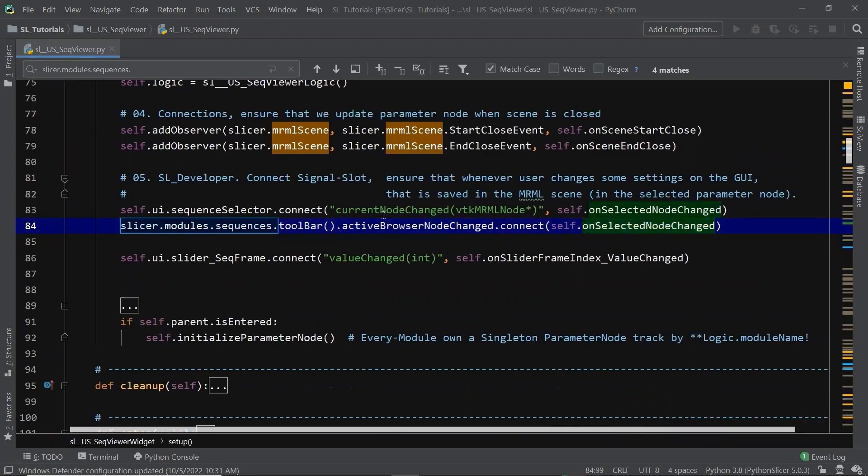We are not done yet. Let's navigate to the slot function on selected node chain. Go to step 2, UI update.